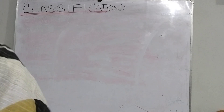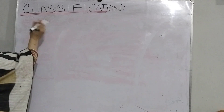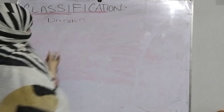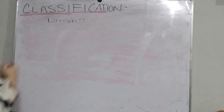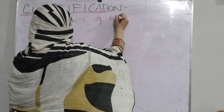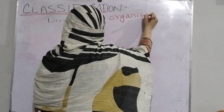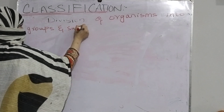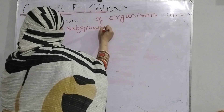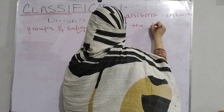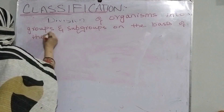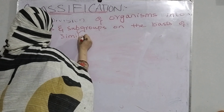What is classification? Classification is the division of organisms into groups and subgroups on the basis of their similarities and differences.